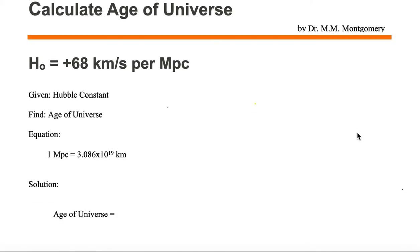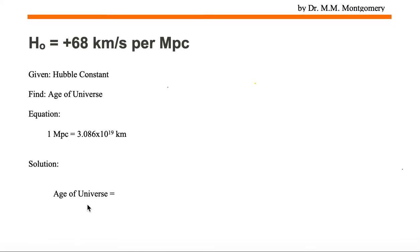From this, we want to find the age of the universe. We're given a conversion of 1 megaparsec equals 3.086 times 10 to the 19th kilometers. So let's solve for the age of the universe.